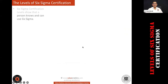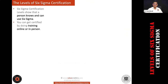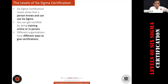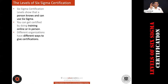Levels of certification — let's go slowly and steadily. The Six Sigma certification levels show that a person knows and can use the tools and techniques of Six Sigma. You can get certified online or in person. Different organizations adopt different ways to give certification, and it is always best to align to some international body and body of knowledge.